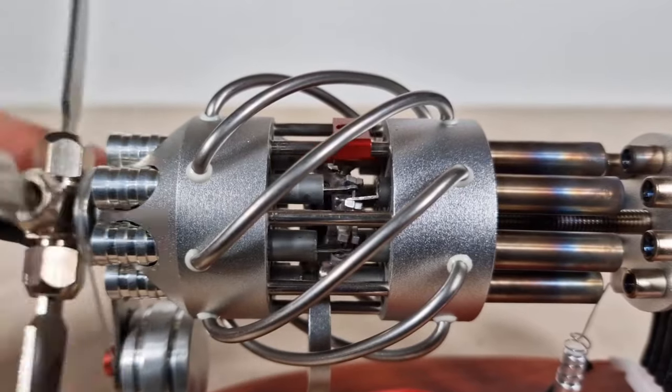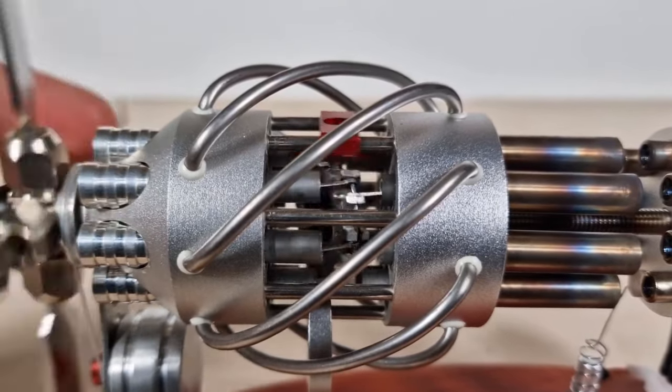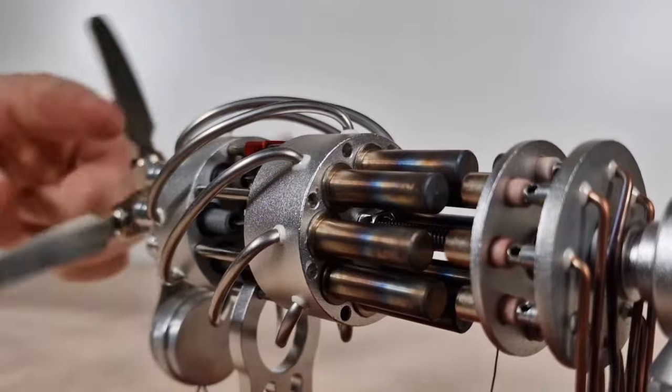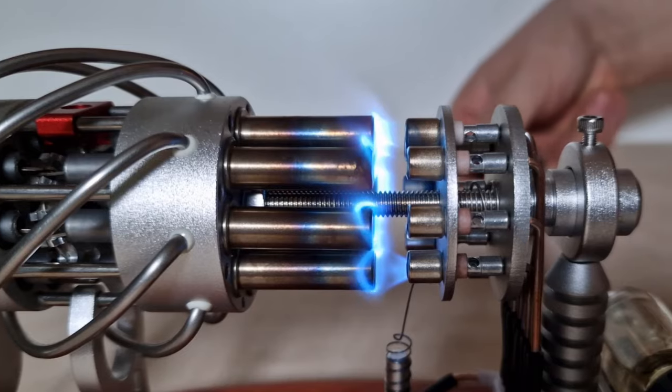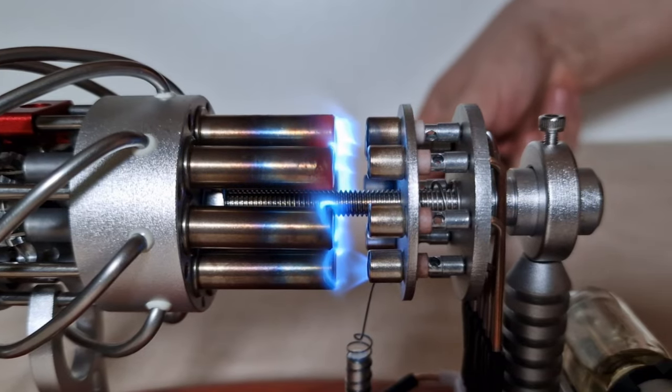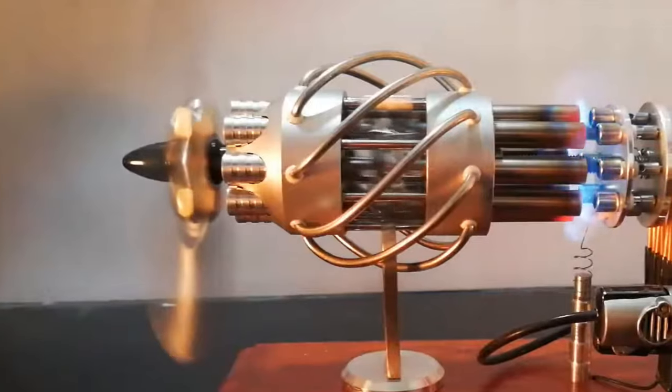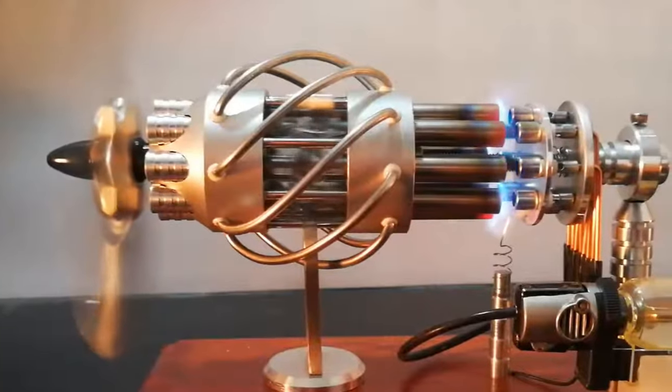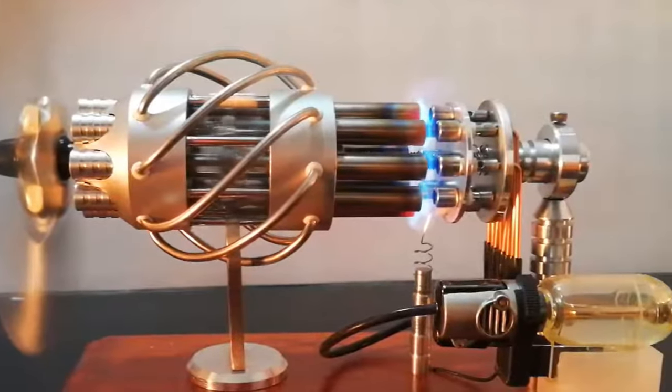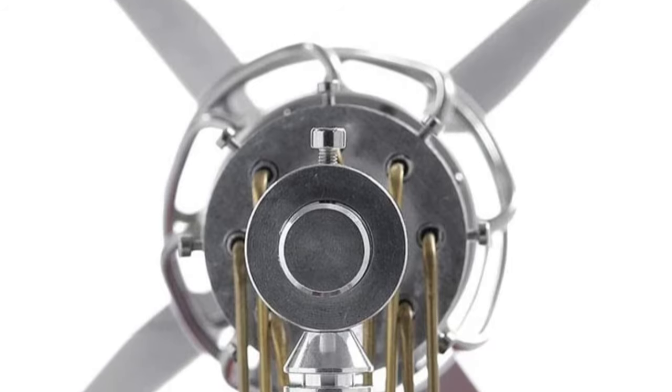So it has eight cylinders for heating and eight cylinders for cooling. The heating cylinders are where the butane fuel is burned to produce heat, and the cooling cylinders are in charge of getting rid of the extra heat that the engine makes. The result is a mesmerizing display of motion and energy that is both beautiful and educational.